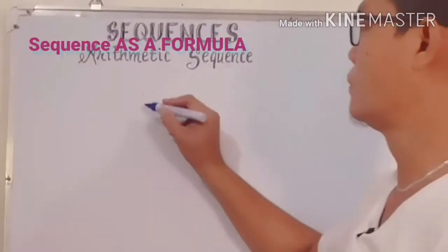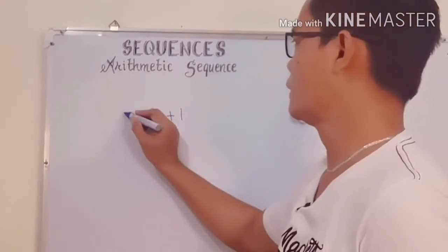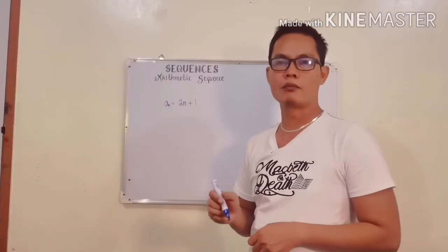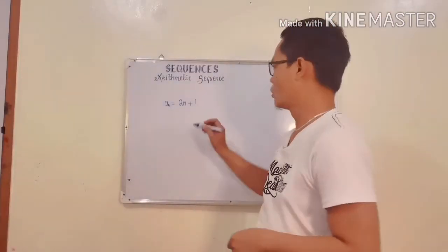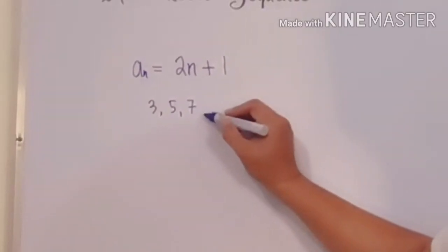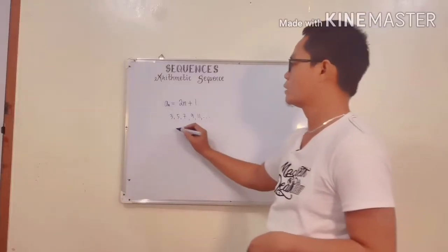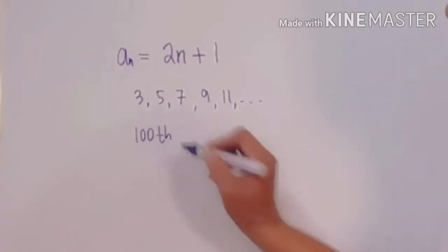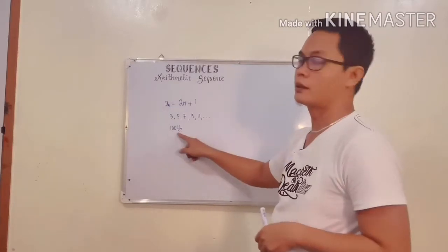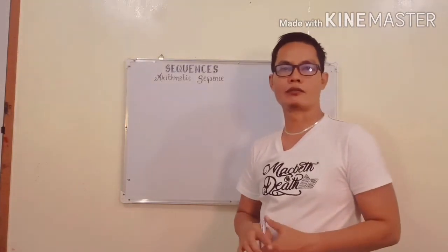Consider the formula - if we have a formula 2n plus 1, let's say this is part of a formula of aₙ = 2n + 1. Determine the 100th term of the sequence 3, 5, 7, 9, 11, and so forth. How will you determine the 100th term? It is very hard for us to continue this pattern up to the 100th term. That's the purpose of arithmetic sequence.